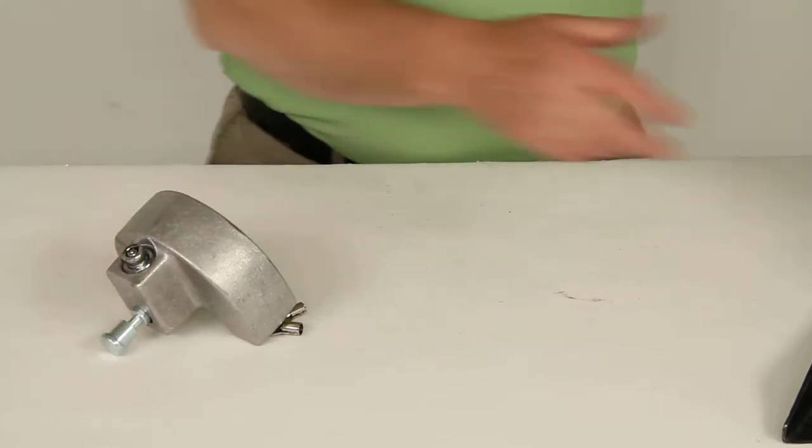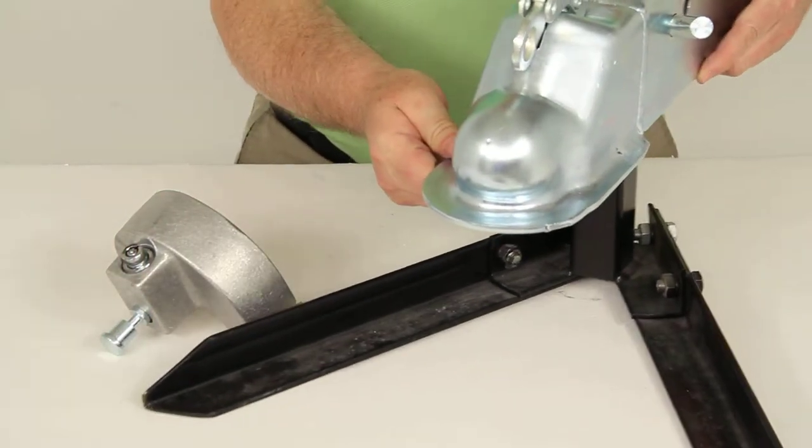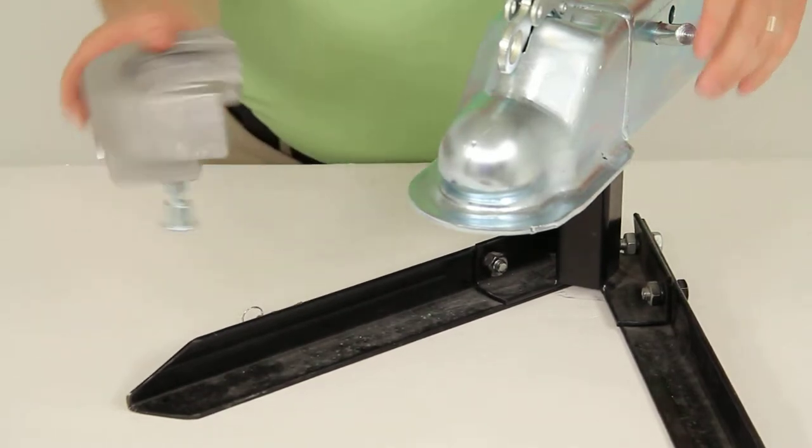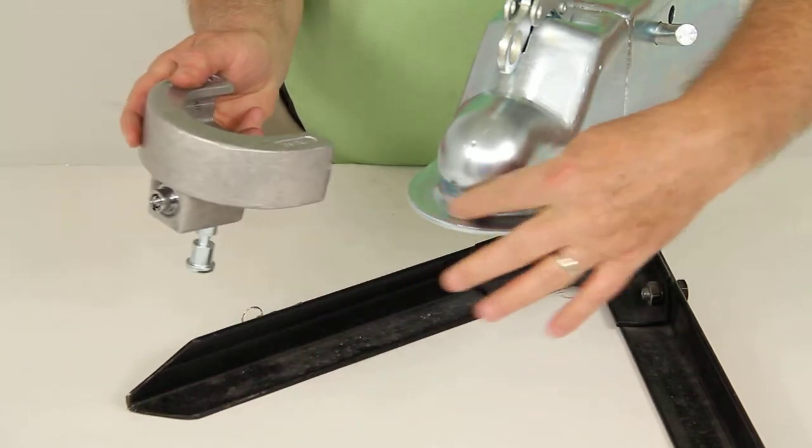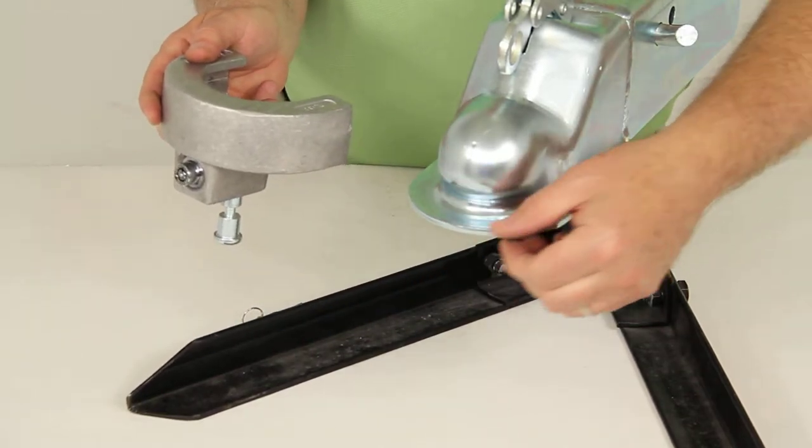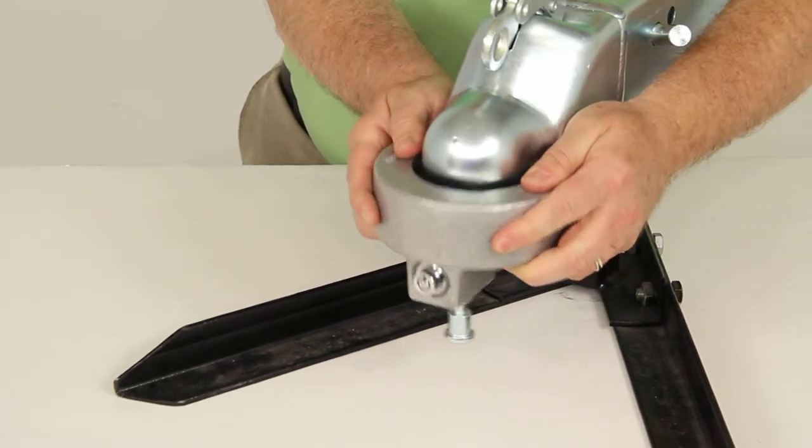I'm going to give you an example here. I pulled a coupler that fits on a 2 and 5/16ths hitch ball just to demonstrate how this lock would work. As you can see, it has the flat lip right here all the way around. You would just put this over that.